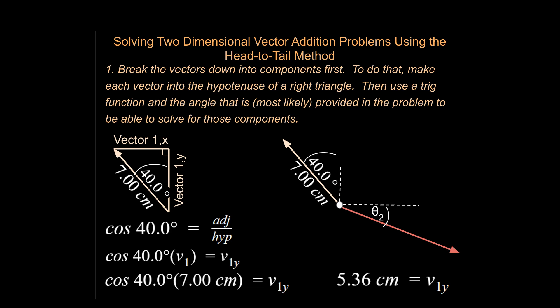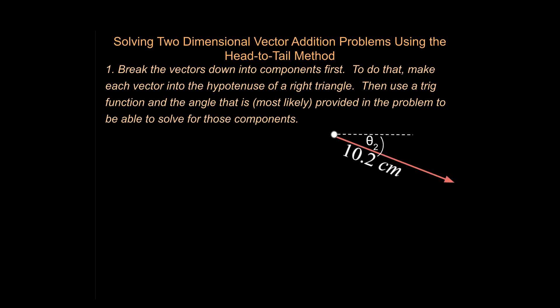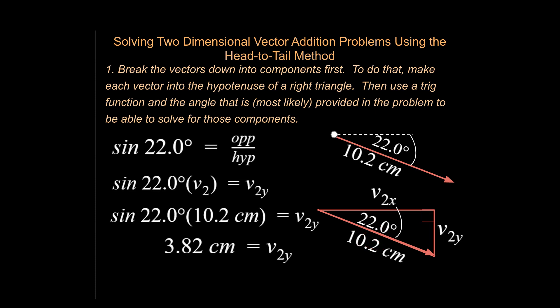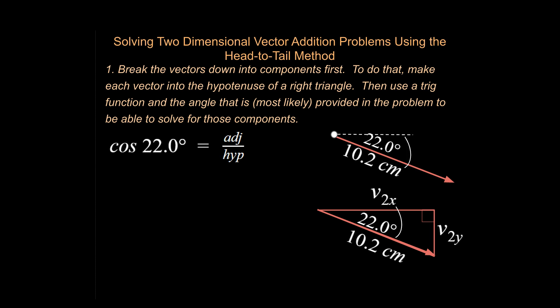Then we're going to do the same thing with the second vector. So let's go ahead and draw the second vector as the hypotenuse to a right triangle like I've done here. I'm throwing in some numbers so we can work with this. And I'm going to do some simple trig to be able to solve for my vector 2y, this component over here using sine. And I'm going to do some similar things and solve for the vector 2x over here. So that's 9.4 or 6 centimeters over here.